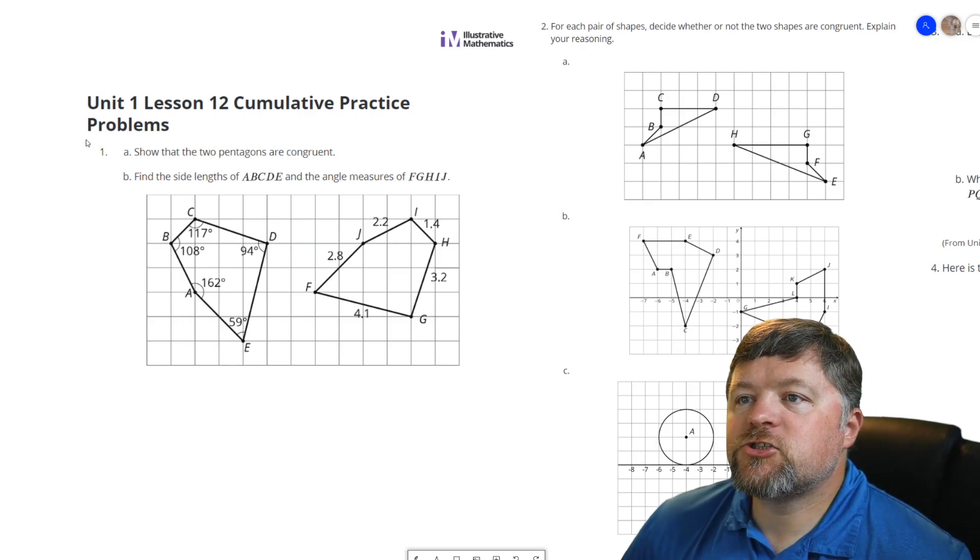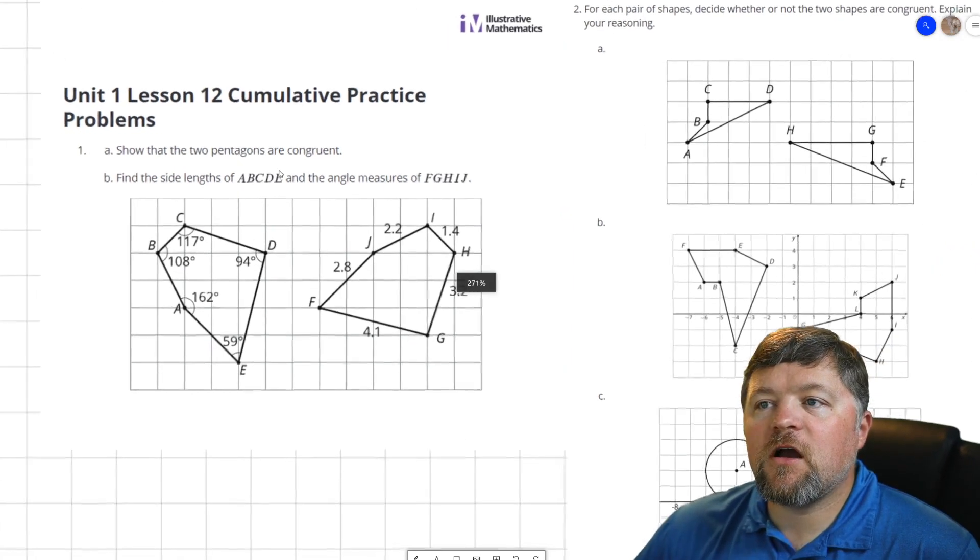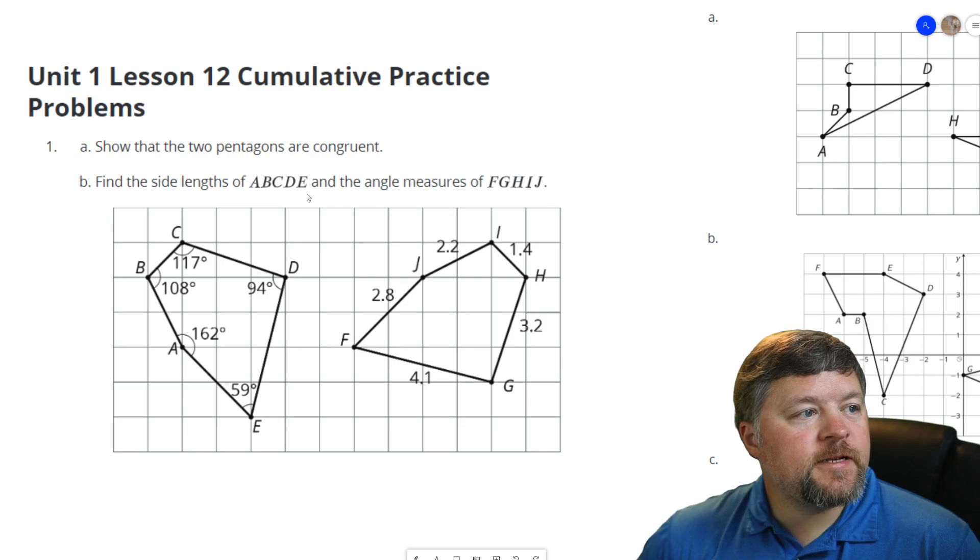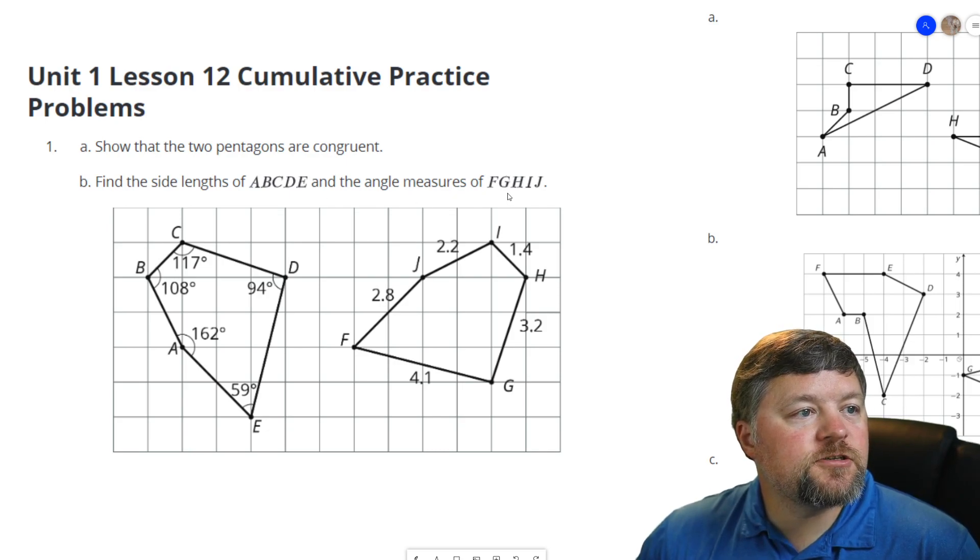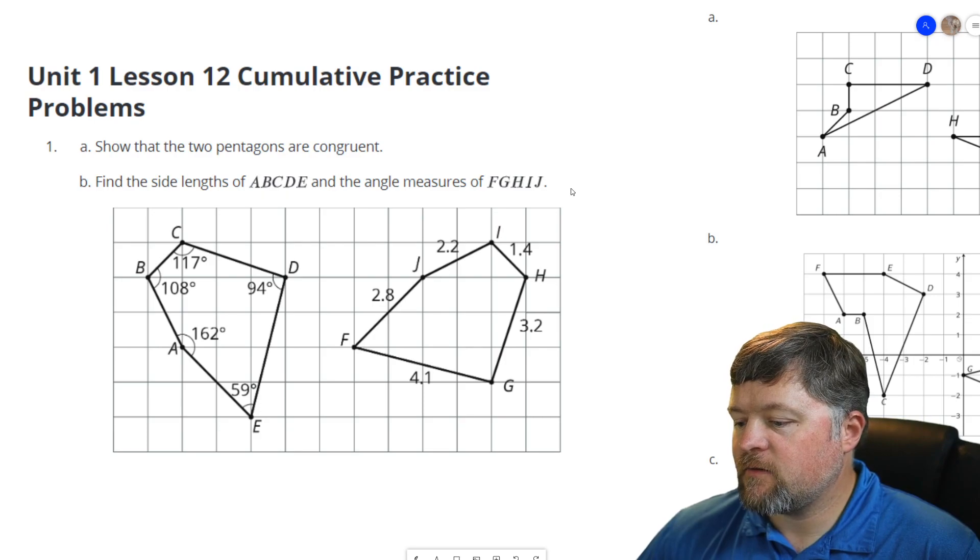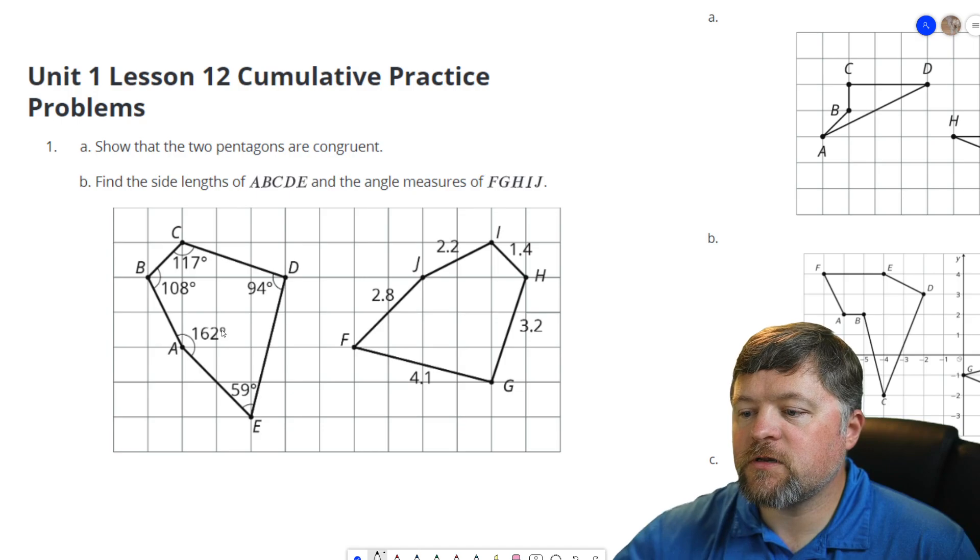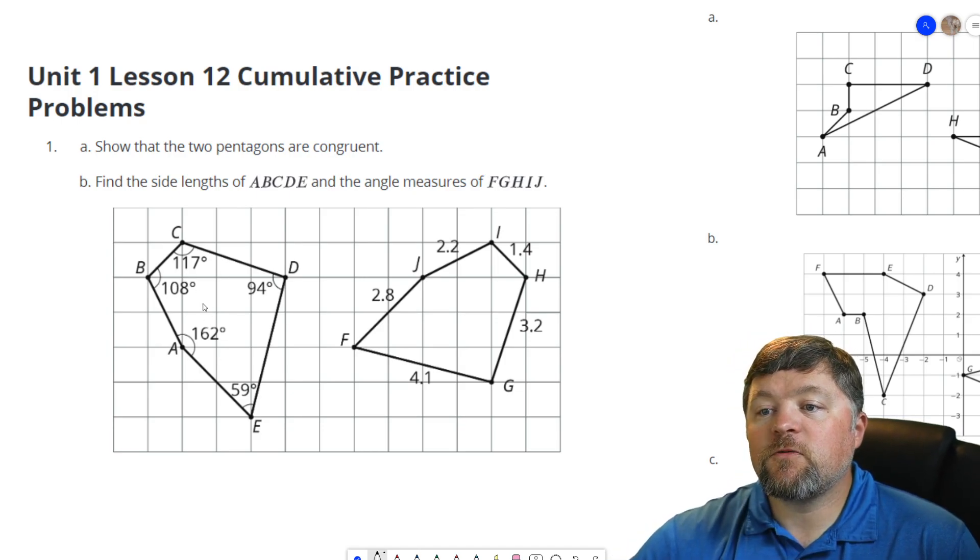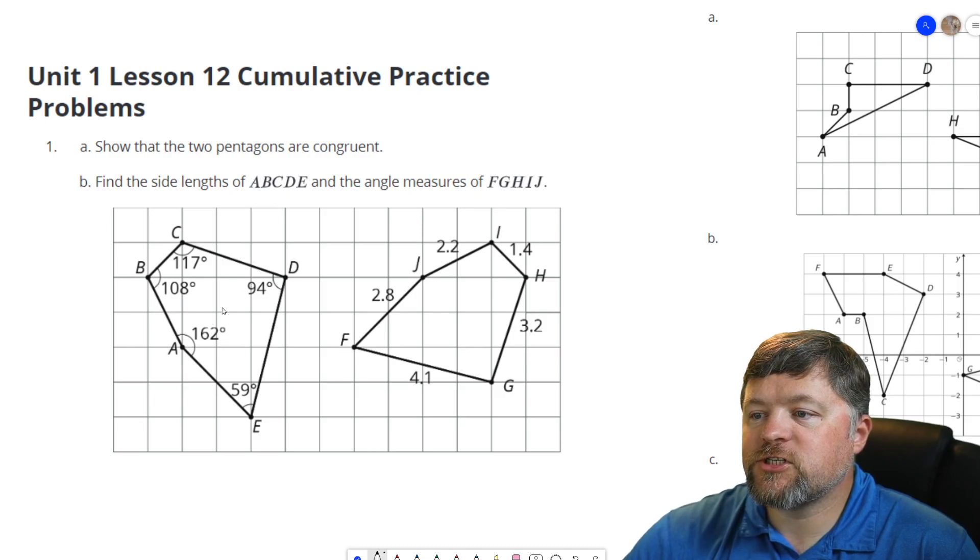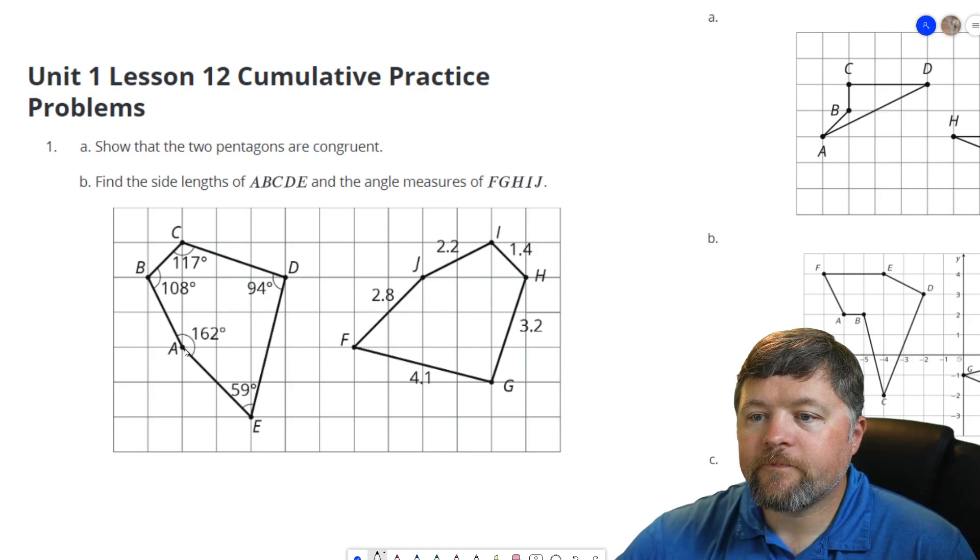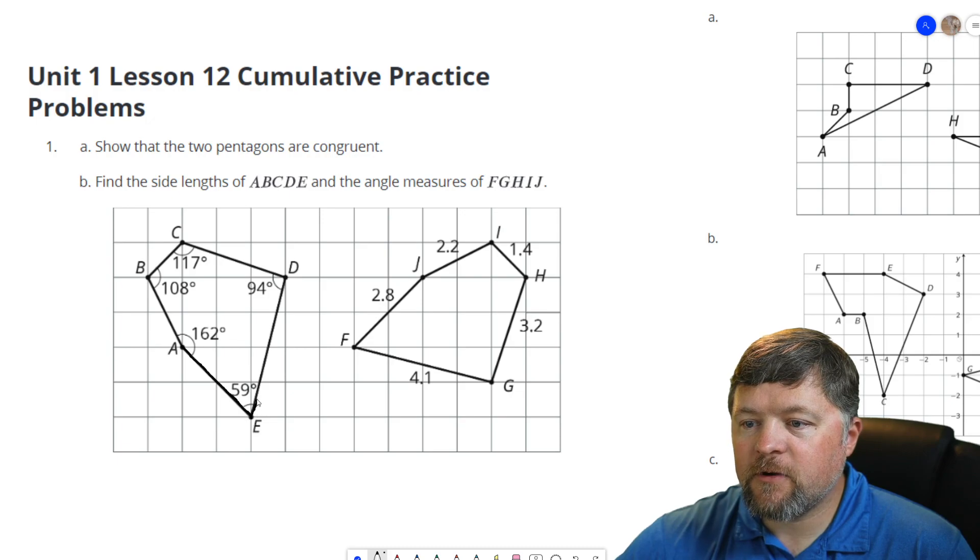Okay, our first problem here says show that the two pentagons are congruent. Find the side lengths of ABCDE and the angle measures of FGHIJ. So how can we show that these two figures are congruent? Well, the easiest way is to prove that there is a rigid transformation that takes this figure onto this figure. You can do that using tracing paper. I'm going to try and do that digitally.